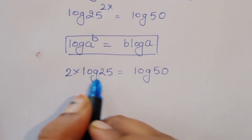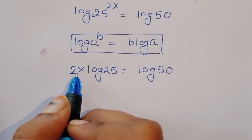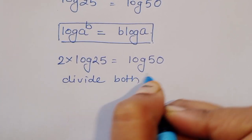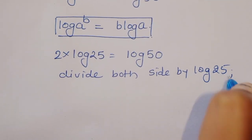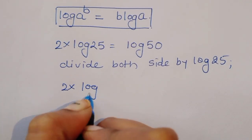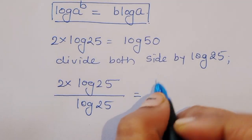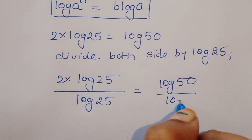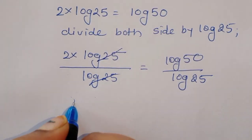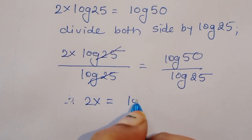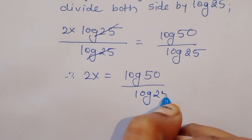Now we have to remove log of 25, so we divide both sides by log of 25. We get 2x times log of 25 divided by log of 25 is equal to log of 50 divided by log of 25. We can cancel log of 25, therefore 2x is equal to log of 50 divided by log of 25.